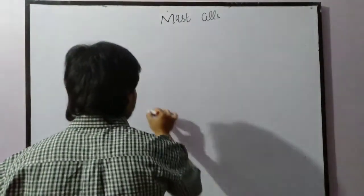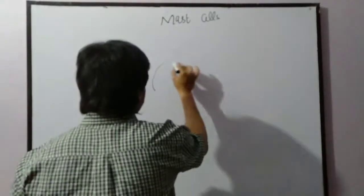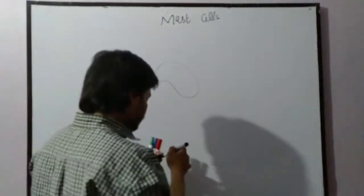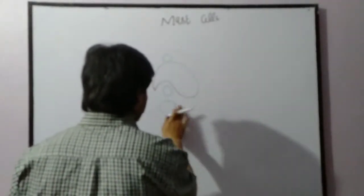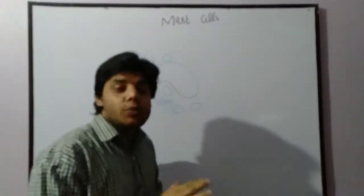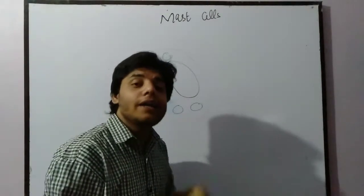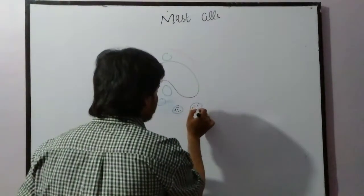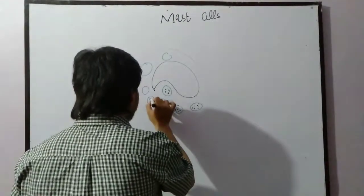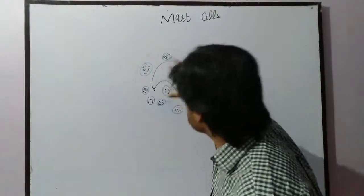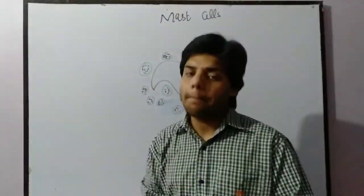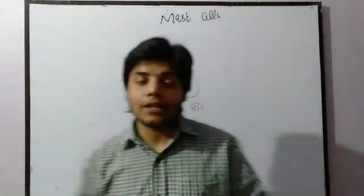Let's see how mast cells look. Mast cells are usually in a circular form, and they have a nucleus. They also contain different kinds of granules. Inside each granule we have different kinds of chemicals — these dots represent the chemicals stored inside each granule of the mast cell.